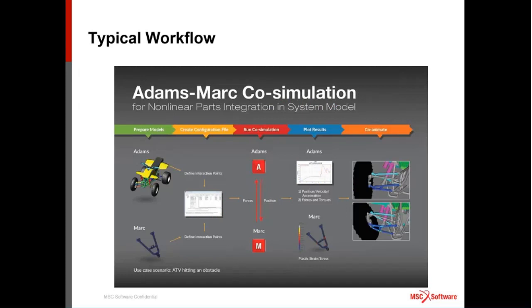The typical workflow starts with preparing models in both ADAMS and MARC, then creating a configuration file that defines the interaction between the two models for the co-simulation tool. There's a small GUI to help set that up. During the run, the ADAMS solver sends position and motion data to MARC, and MARC passes force response back to ADAMS. Post-processing can be done independently in each tool, and optionally a co-animation can be done through a plug-in in ADAMS and CEI Insight.